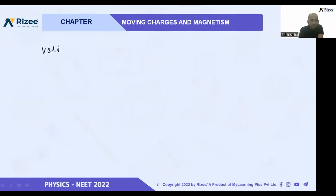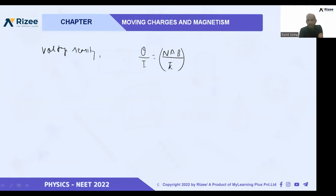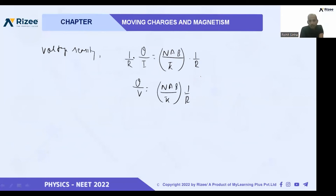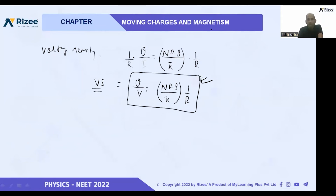Now for voltage sensitivity: we already studied current sensitivity where θ/I = NAB/k. For voltage sensitivity, we multiply both numerator and denominator by resistance R, converting current to voltage. We get θ/V = (NAB/k) × (1/R). This is the formula for voltage sensitivity.